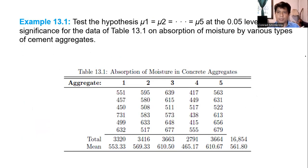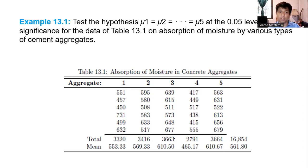Let's solve Example 13.1: Test the hypothesis that U1 equals U2 equals U5 at a 0.05 level of significance, for data on absorption of moisture by various types of cement aggregate. We have 30 data points. The different types of aggregate are aggregate 1 through 5, so K equals 5 — meaning 5 treatments, with 6 samples each. The totals for each treatment are given, which we'll use to calculate SSA or SSB.